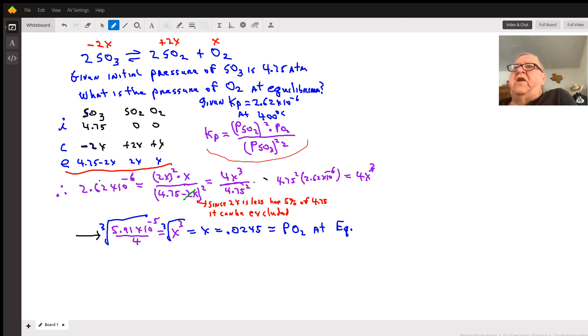Given that you have just 4.75 atmospheres of the sulfur trioxide initially, you set up your ice table. Initially it's 4.75 and the products are both zero. When the sulfur trioxide changes by 2x, the sulfur dioxide increases by 2x and the oxygen gas x. That's your change.